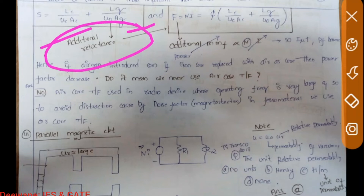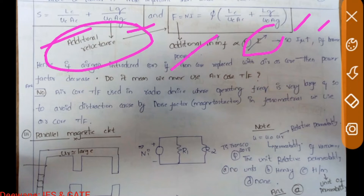If the air gap is large, like in a tube light choke, it gives a humming sound due to magnetostriction at 100 Hz. The additional MMF is proportional to N·I, so current from the source increases. In a transformer, if air gap increases, magnetizing current Iμ increases, and power factor decreases. Final conclusion: if you introduce an air gap, Iμ increases, reactive current increases, and power factor decreases.